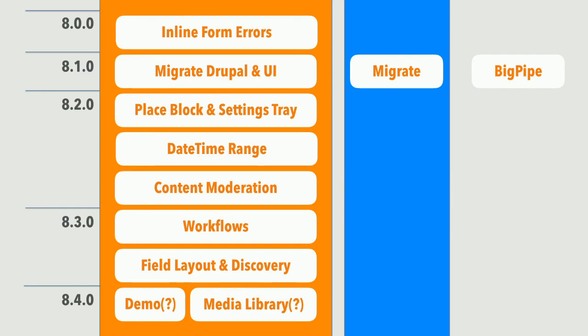We've only heard from experimental module maintainers and core committers, but part of the experimental module process is trying to surface that to other people. It would be good to hear from people who are seeing them, or possibly using them, or thinking about using them. One person shares about Migrate Plus and Migrate Tools: they opened 8.x-4.x for both to be compatible with Drupal core 8.3.x and have had a new major version of those contrib modules for each core minor version, because the Migrate API has kept evolving. They are very motivated to get this stable for 8.4.x so they don't need to maintain branches.